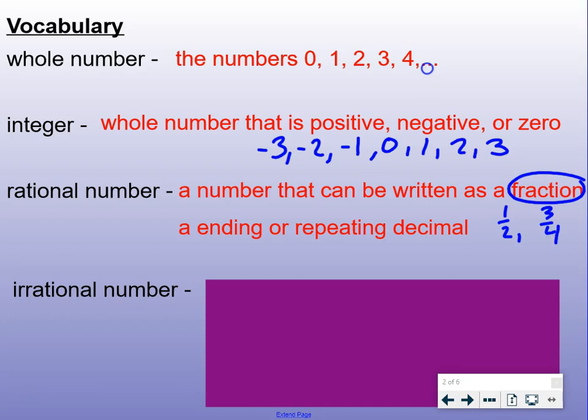An ending or repeating decimal. An ending decimal would be like 0.5 because it ends. A repeating decimal is a number that repeats, like 0.7777, and we draw a line over those sevens to show it repeats. Any of those would be rational.